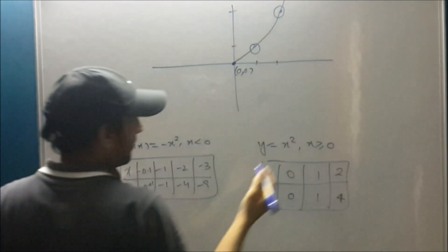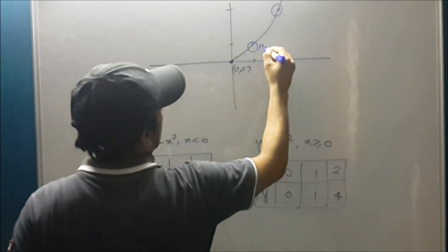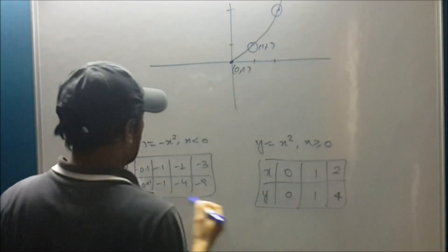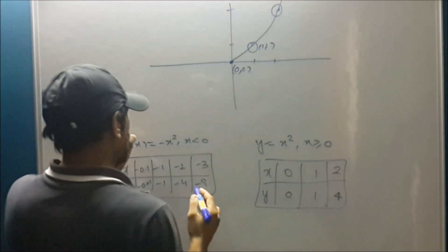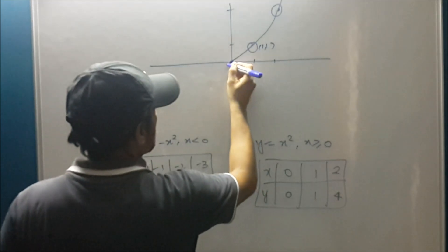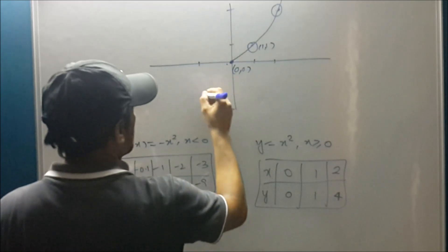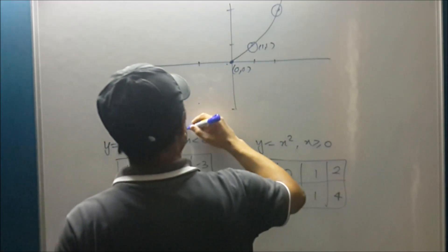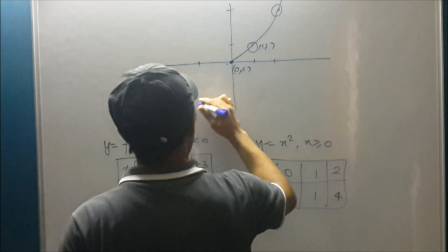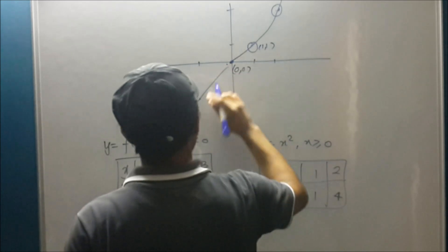So something like this. Same way for the downward parabola. When we put minus 0.1 it is turning to minus 0.01 which is here. And minus two. When we put minus two it turns to minus four. Somewhere here. So it is like this. So this is the downward parabola. This is the downward parabola.